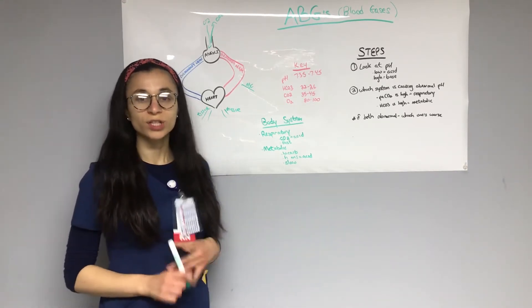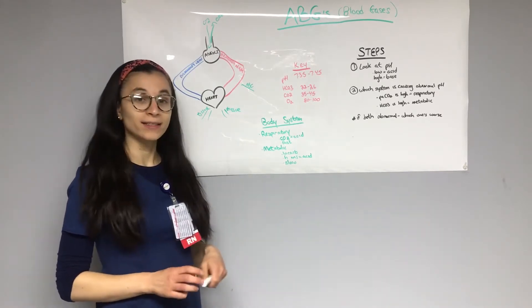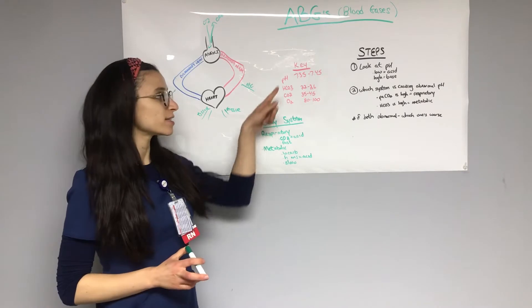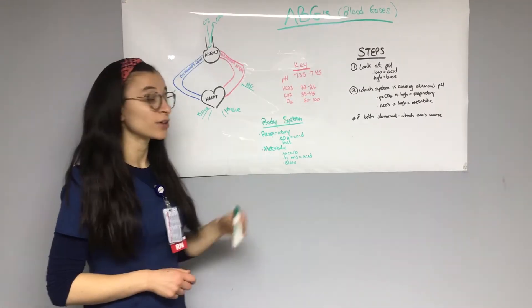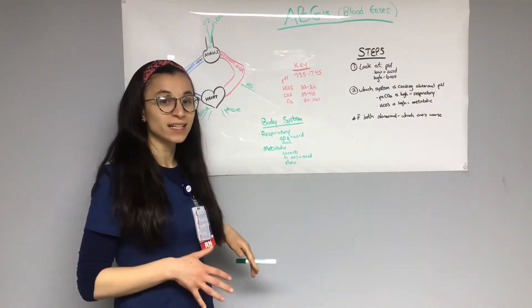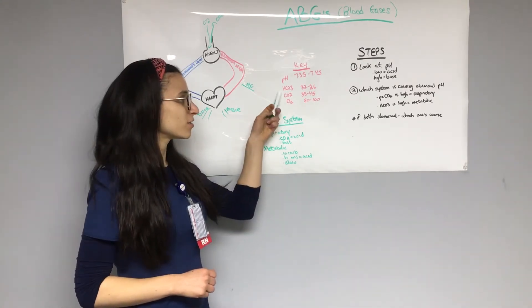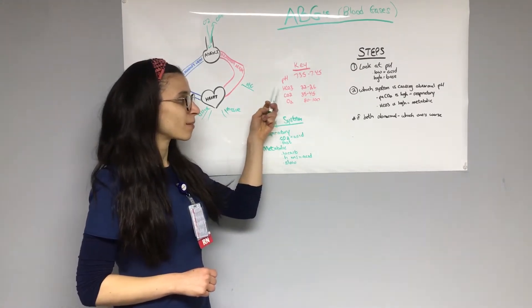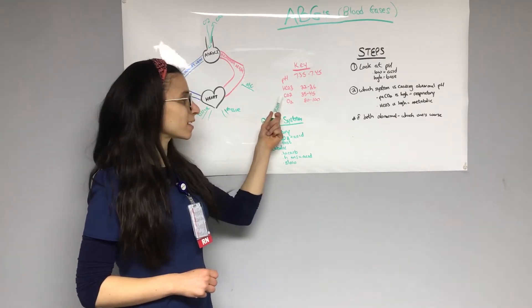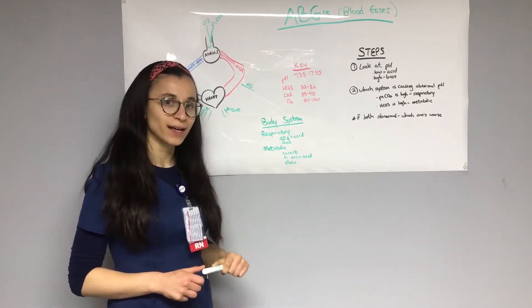So to start off, arterial blood gas is telling you these things — this is your key. It's going to tell you your pH, which tells you how acidic or alkaline your body is. It's going to tell you how much bicarb your body has, how much carbon dioxide, and how much oxygen your body has.